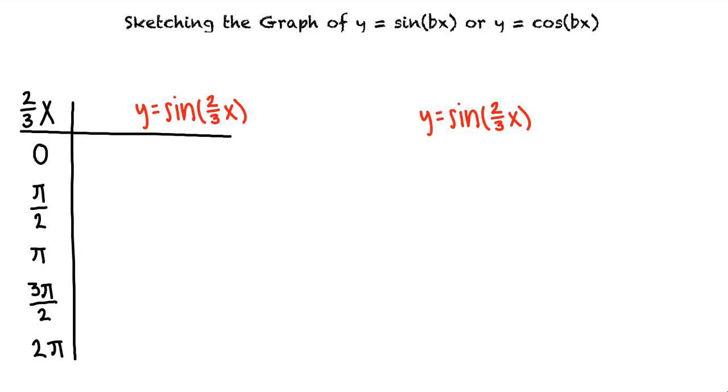3 pi halves, and 2 pi. Solving these equations for x we see that x equals 0, 3 pi fourths, 3 pi halves, 9 pi fourths, and 3 pi.